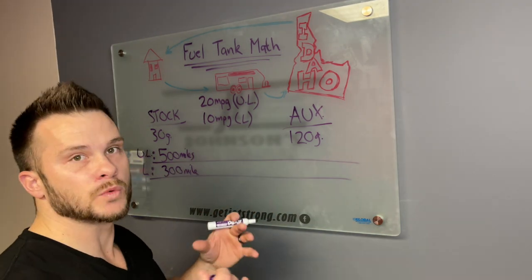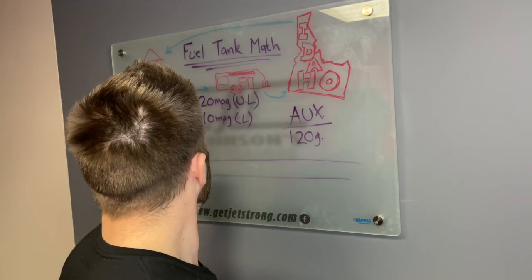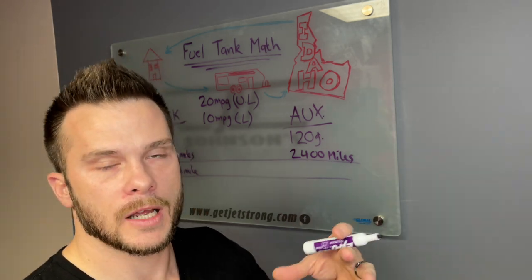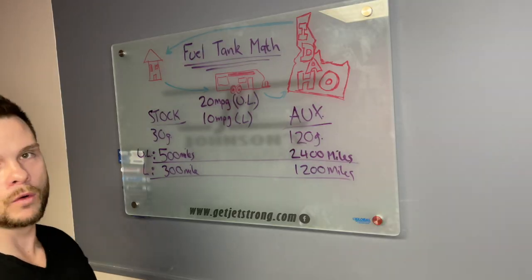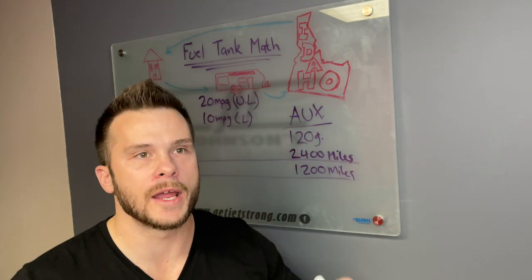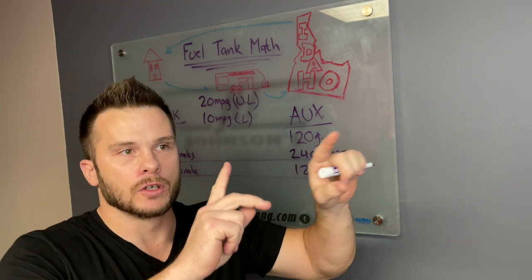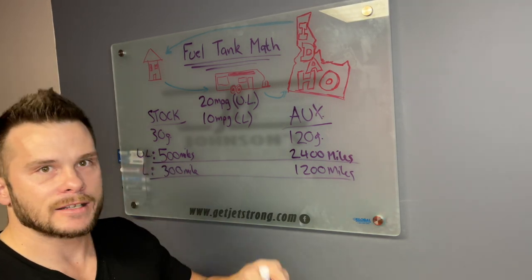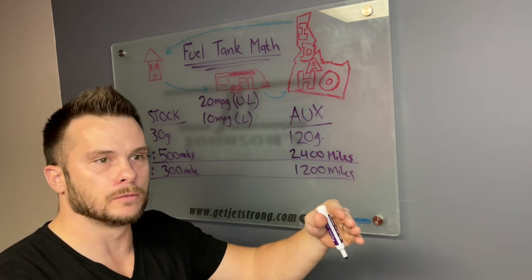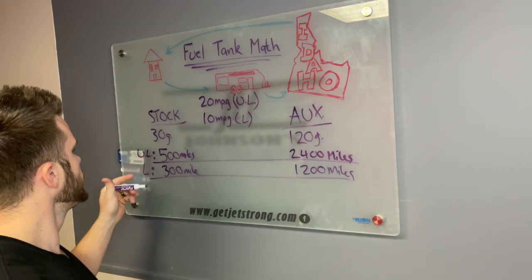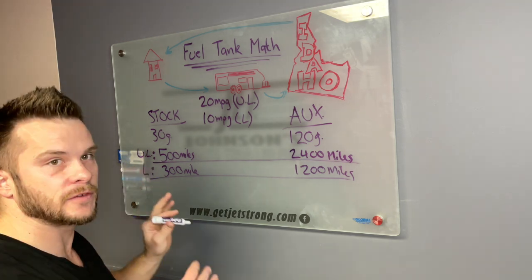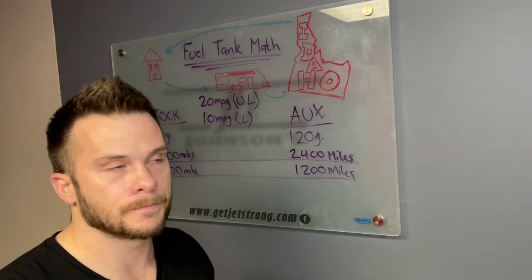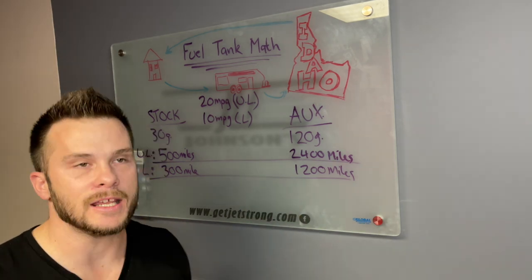The auxiliary setup has 120 gallons between the stock tank and your auxiliary tank. Unloaded, you're going to get 2400 miles averaging 20 miles a gallon, and loaded we're at 1200 miles. We don't want to drive the truck all the way to empty, so I put a limit on there—an upper range of 25 to 50 miles from either my loaded or unloaded remaining miles.